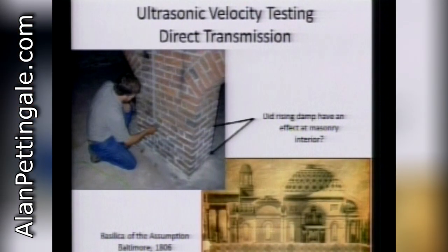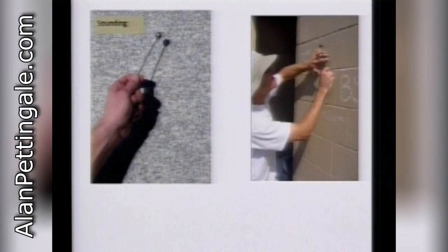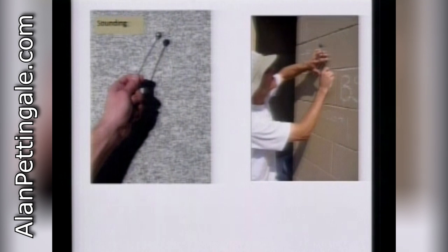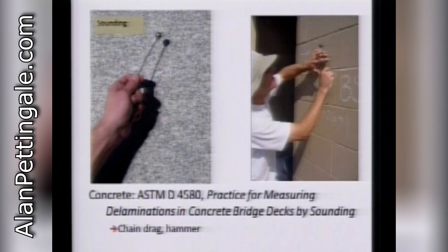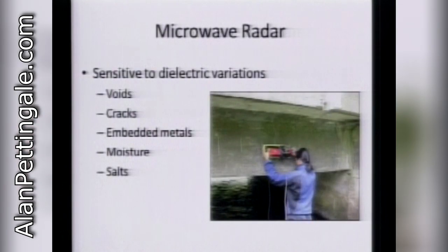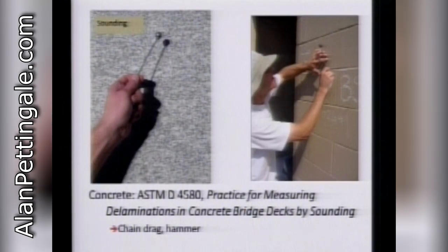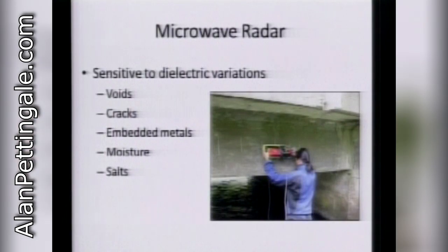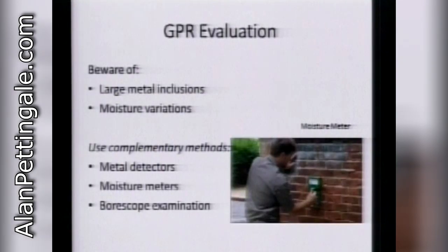Ultrasonic velocity testing with direct transmission — this is from the Basilica of Assumption. Sounding hammers are also used; there's an ASTM practice for measuring delaminations in bridge decks using a chain drag, where you drag a chain across or hammer the surface. Microwave radar — specifically GPR, ground penetrating radar — is another tool available.